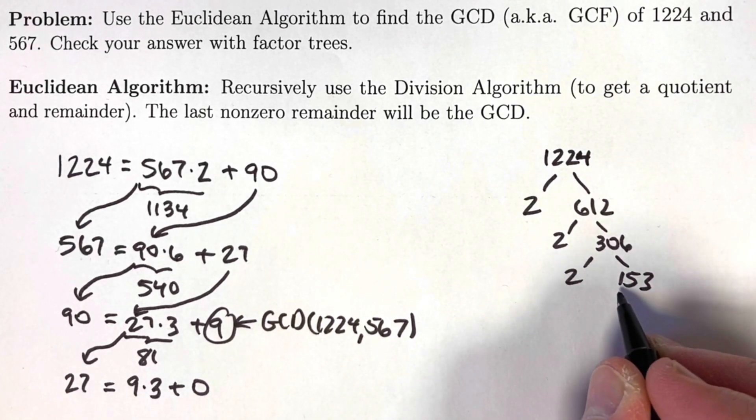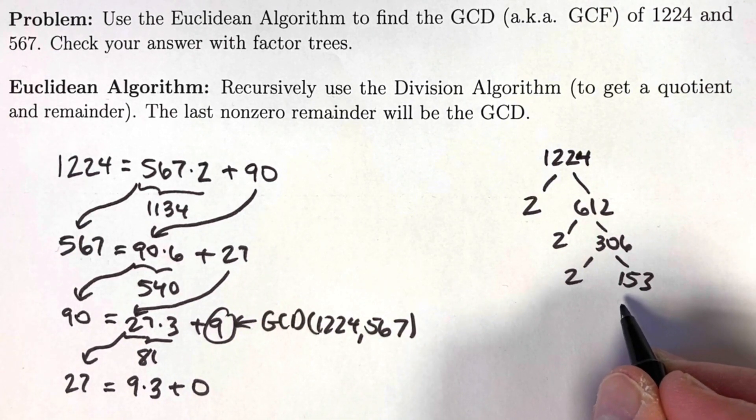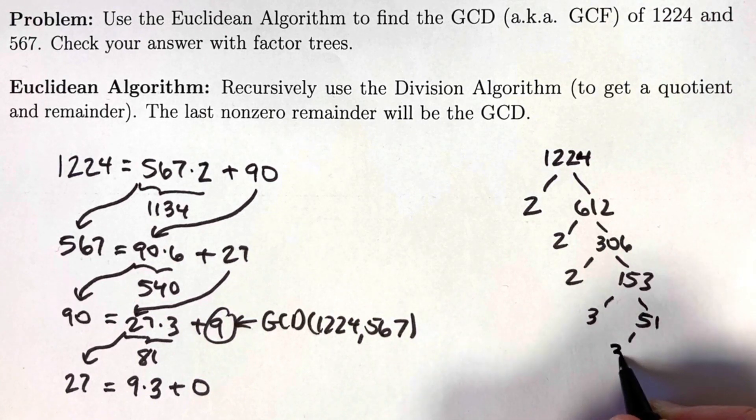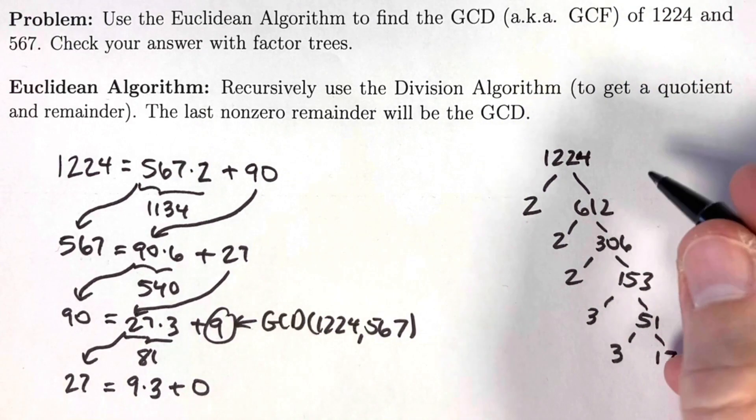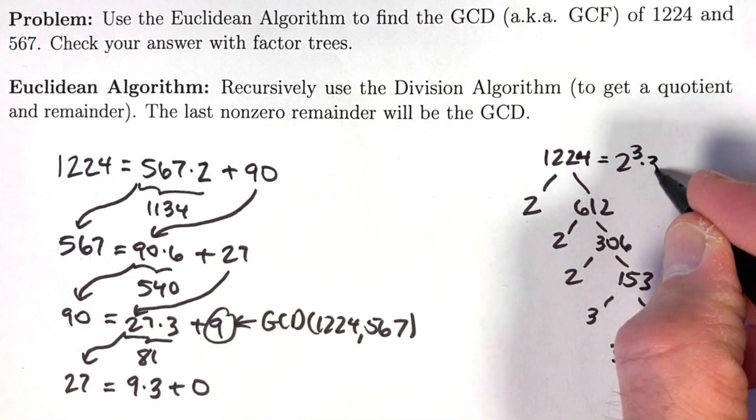1 plus 5 plus 3 is 9. The sum of the digits is 9. It's divisible by 3 because 9 is divisible by 3. It's also divisible by 9, in fact, because 9 is divisible by 9. This is going to be 3 times 51, and 51 is 3 times 17. The prime factorization of 1224 is 2 to the third power times 3 to the second power times 17.